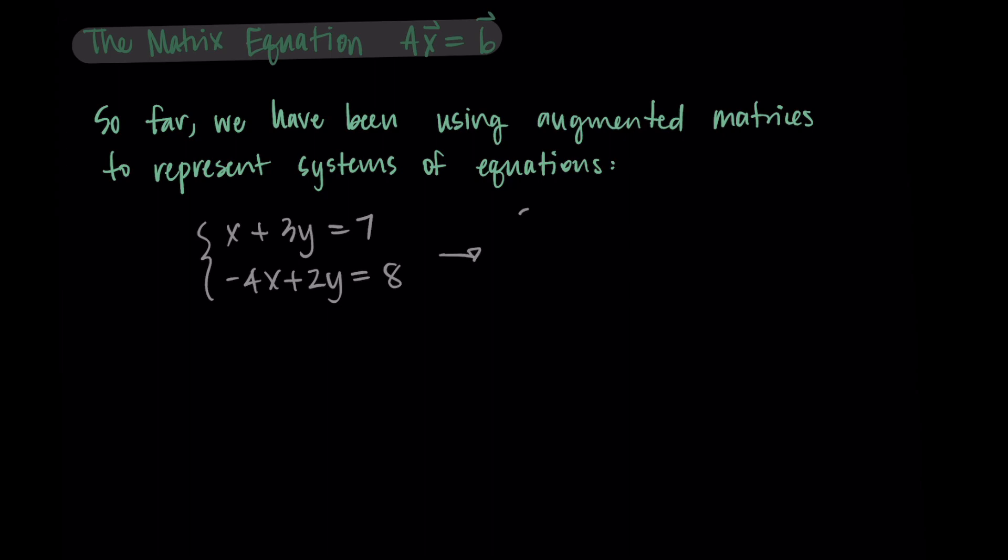And then what we've been doing to solve this type of system is by writing it as an augmented matrix. So when we do that we would write 1 3 7 with the 7 on the right hand side of a vertical bar and then negative 4 2 8 for the second row. So we would put each equation in a row of this matrix and we put the vertical bar to represent the equal sign.